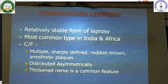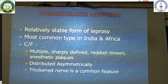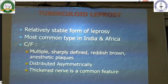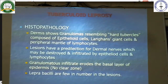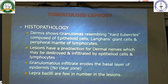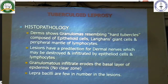Tuberculoid leprosy: it is a stable form of leprosy, common in India and Africa. Clinically, it presents with multiple sharply defined reddish-brown anesthetic plaques or patches, asymmetrically distributed throughout the body, usually with a thickened nerve involved. Histopathologically, the dermis shows granulomas resembling hard tubercles composed of epithelioid cells, Langhans giant cells, and a peripheral mantle of lymphocytes. Lesions have a predilection for dermal nerves, which may be destroyed or infiltrated by epithelioid cells and lymphocytes. The granulomatous infiltrate erodes the basal layer of the epidermis.